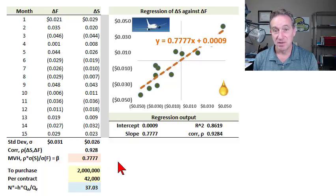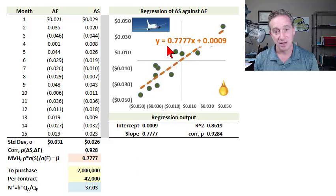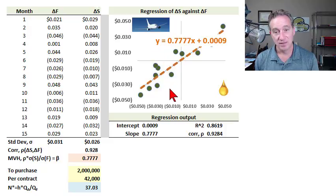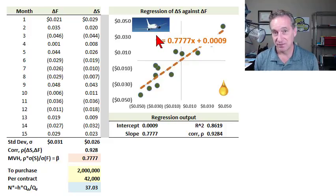To illustrate the minimum variance hedge, I've replicated John Hull's example 3.3, where the scenario is an airline with a plan to purchase 2 million gallons of jet fuel one month in the future. Their underlying exposure, their price risk, is to the price of jet fuel. They may be concerned that over the next month the price of jet fuel increases, which would increase their cost. So they could put on a crosshedge by using heating oil futures contracts. It's a crosshedge, not a hedge, because currently they can't get a futures contract on jet fuel, the same commodity that they'd like to hedge.